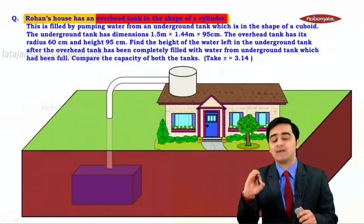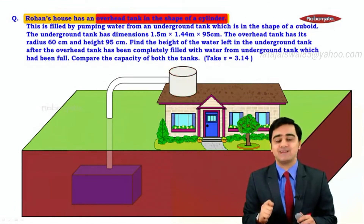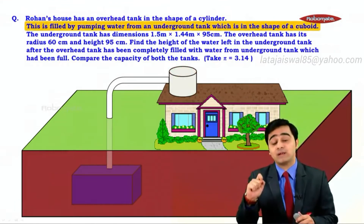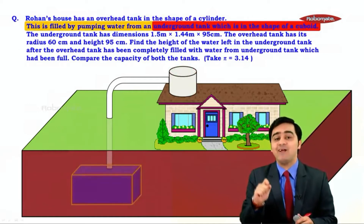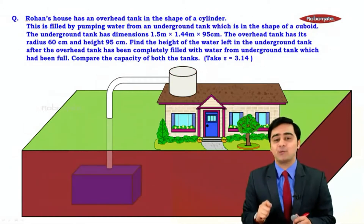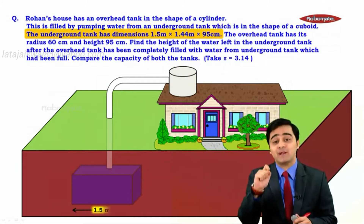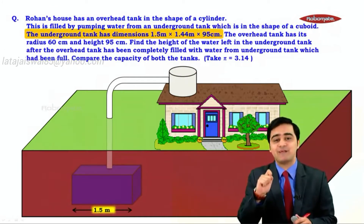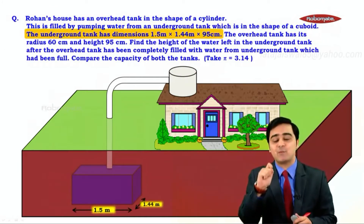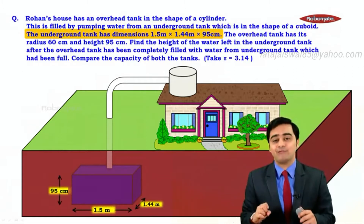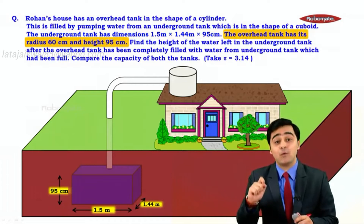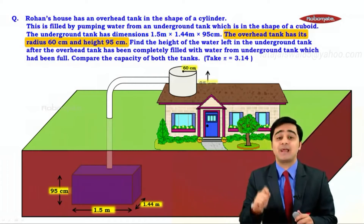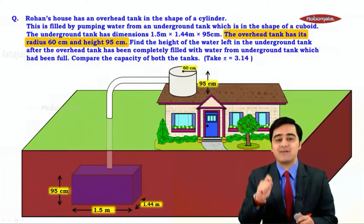We have an overhead tank in the shape of a cylinder. This overhead tank is filled by pumping water from an underground tank which is in the shape of a cuboid. The length of the underground tank is 1.5 meters, the breadth is 1.44 meters, and the height is 95 centimeters. The radius of the overhead tank is 60 centimeters and its height is 95 centimeters.